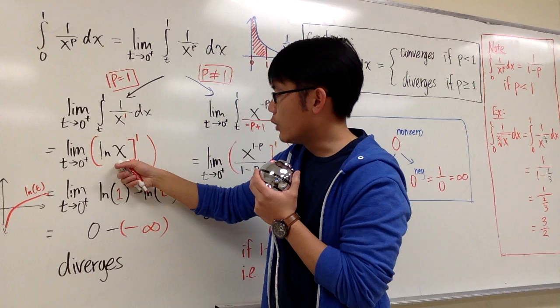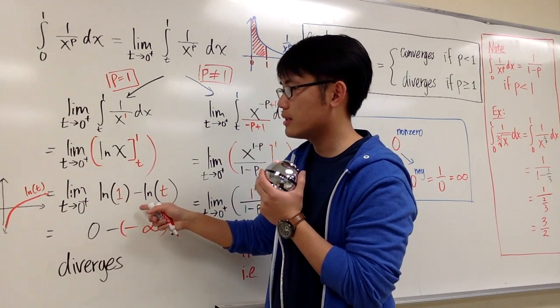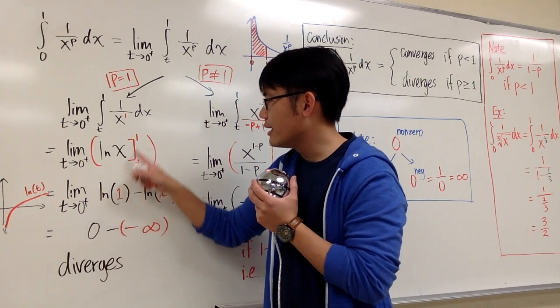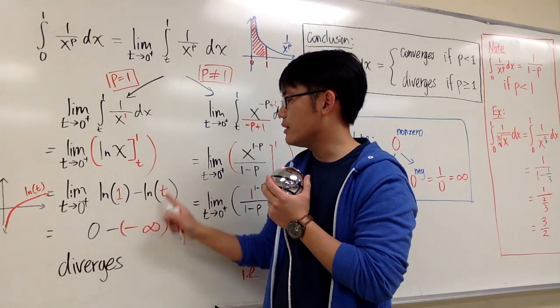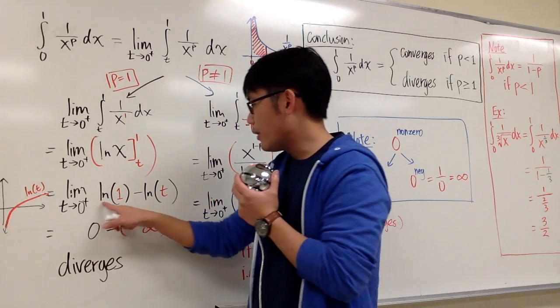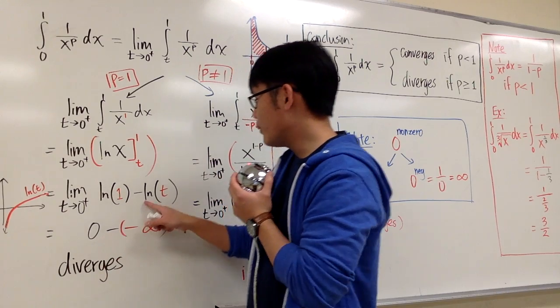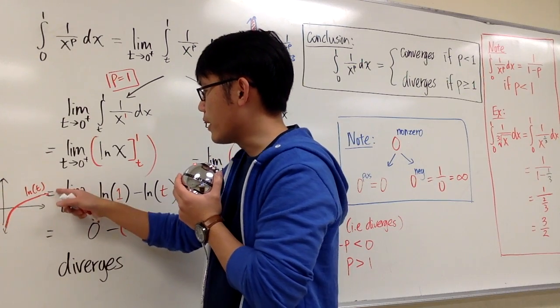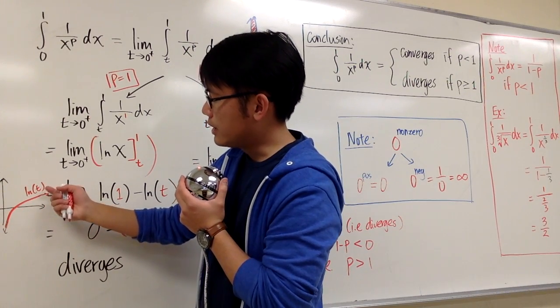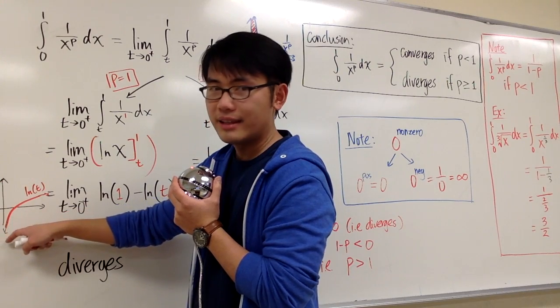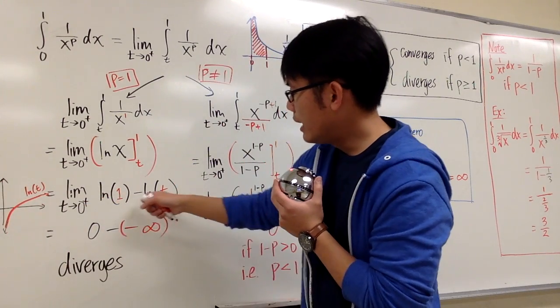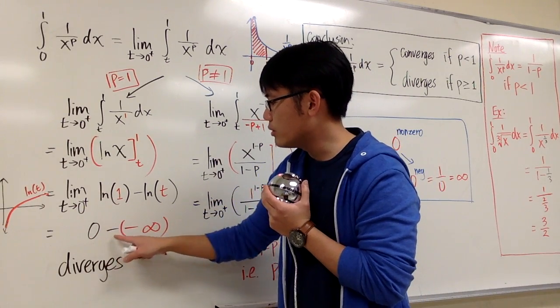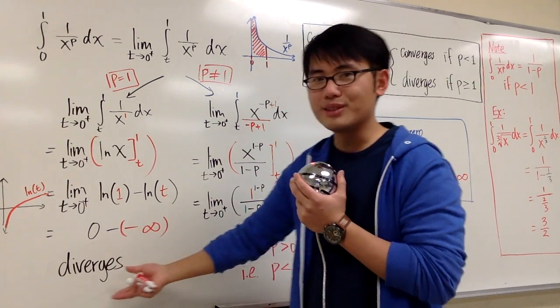So we integrate this, we get ln(x). We plug in 1, plug in t, and subtract. We are taking a limit as t approaches 0+, when we have ln(1) minus ln(t). ln of 1 is 0, no problem. What's ln of t when t is approaching 0+? If we look at a graph, this is the graph of ln. When the t value approaches 0 from the right-hand side, you see the graph goes straight down. So ln(t) goes to negative infinity when t goes to 0+. All in all, this is 0 minus negative infinity. It just diverges.